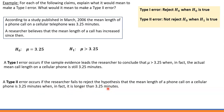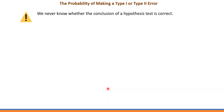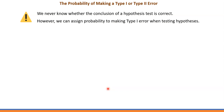This is what it means to make a Type 1 or Type 2 error. What's important to understand is that we never know whether the conclusion of a hypothesis test is correct — in other words, we never know if we made a Type 1 or Type 2 error. However, there's a way to minimize that error — we can assign a probability to making a Type 1 or Type 2 error when testing a hypothesis.